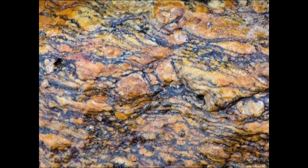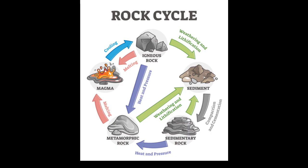As you can see here, this is the rock cycle. Firstly, magma cools to form igneous rocks. Those igneous rocks, due to weathering, form sediments, which after compaction and cementation become sedimentary rocks. Due to great heat and pressure, both igneous and sedimentary rocks become metamorphic rocks. Specifically, shale becomes slate, sandstone becomes quartzite, limestone becomes marble, and granite becomes gneiss.